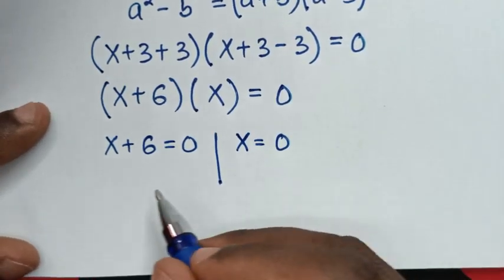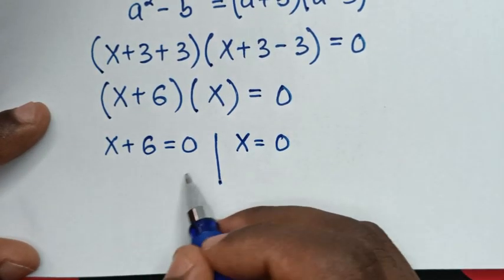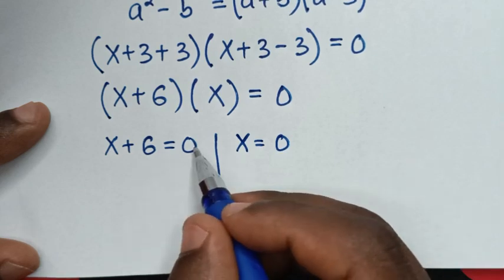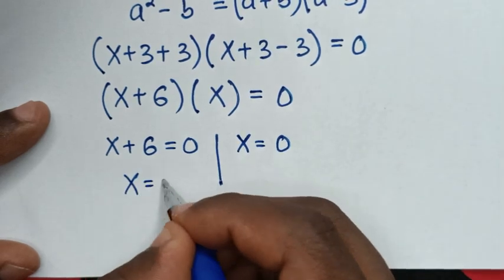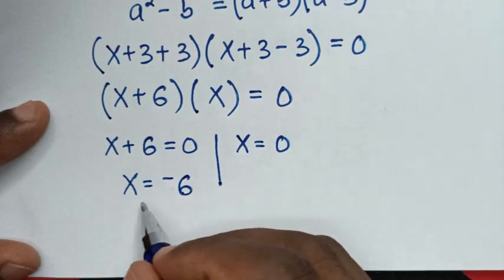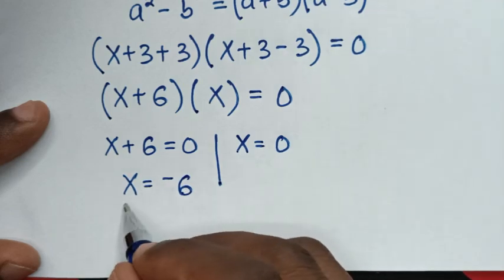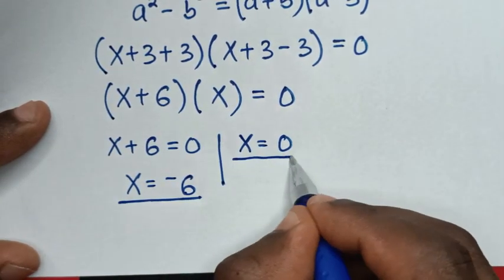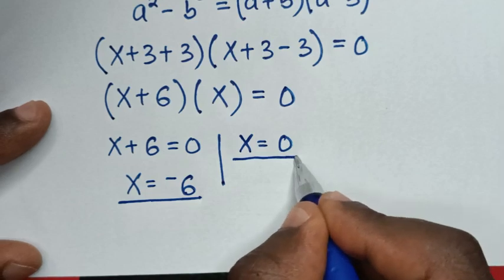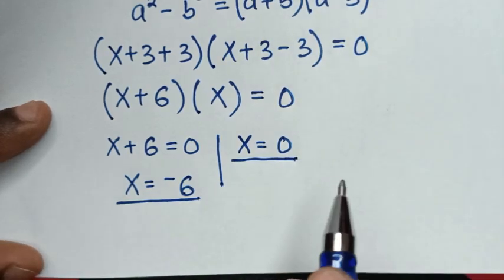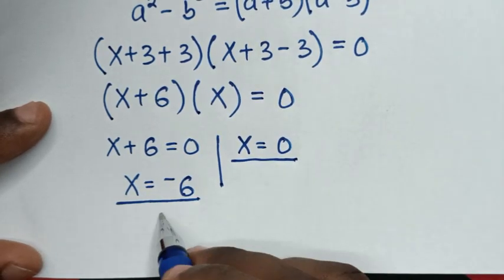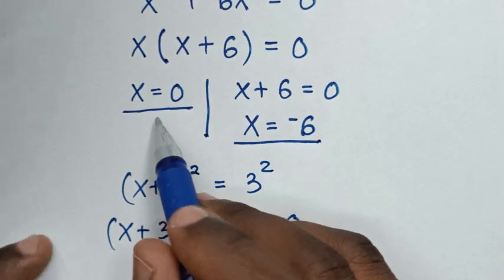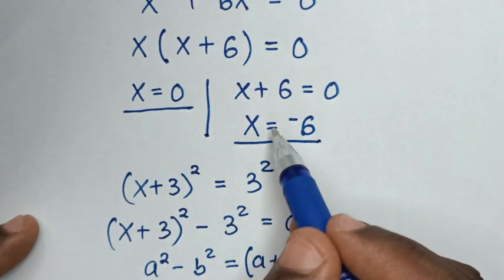From the first solution, we take 6 to the right side: x = −6. This is the first value of x, and x = 0 is the second value. So we have two solutions: x = 0 and x = −6 — the same results as the first method.